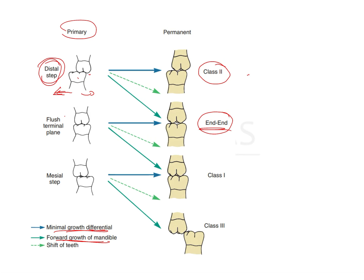If there was a flush terminal plane relationship, with minimal growth the same molar relationship replicates in the permanent molars — from flush terminal it becomes end-on. However, if growth occurs in the mandibular arch or if there is mesialization of the mandibular arch, this end-on relationship progresses into a class 1 molar relationship.